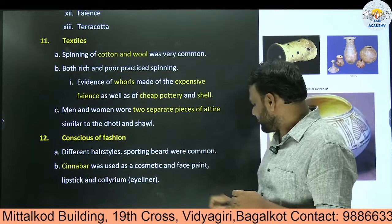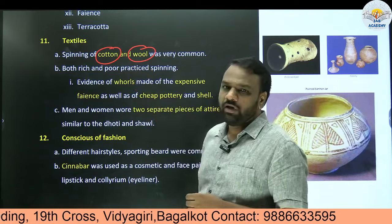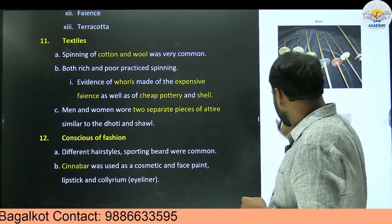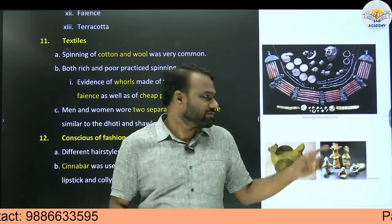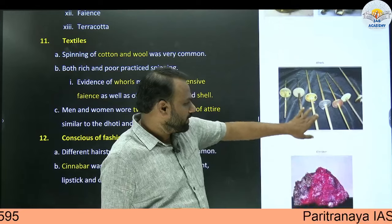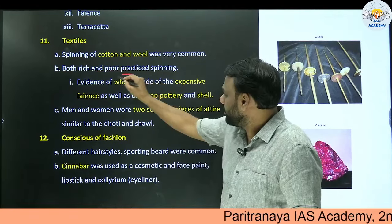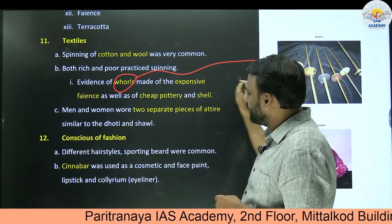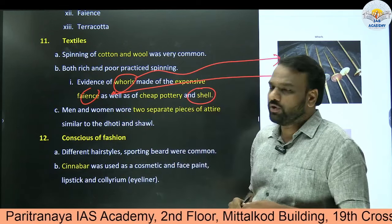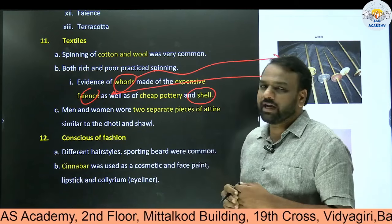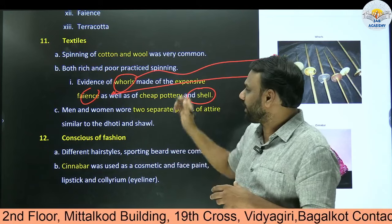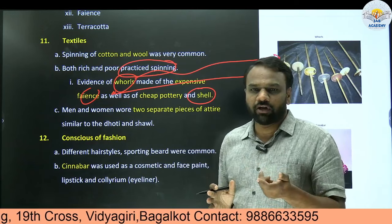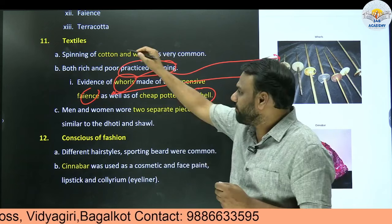Next, textiles. Indus Valley civilization people were aware of cotton and they were also aware of wool. Proofs indicate that both rich as well as poor were involved in spinning. Rich people used faience spindle whorls and poor used shell, indicating that both classes were involved in the practice of spinning. What kind of questions can be framed here? 'Indus Valley civilization people were unaware of cotton' — if they pose such a question, that will be false. They were aware of cotton.